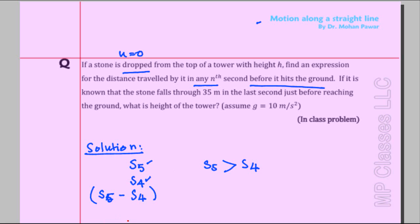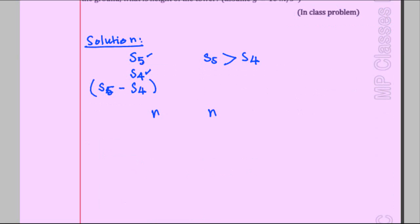For the fifth second we considered four, so for the nth second we consider n minus one. This relationship is always true. What we don't know is whether n can exceed the total fall time t — certainly not, because the stone is already on the ground. So n must be less than t.